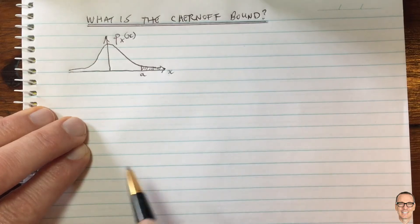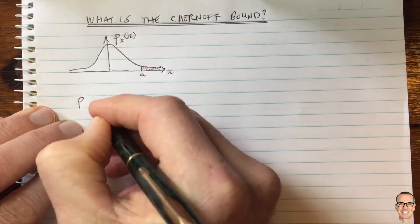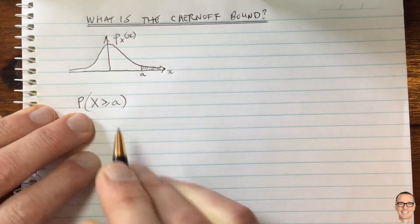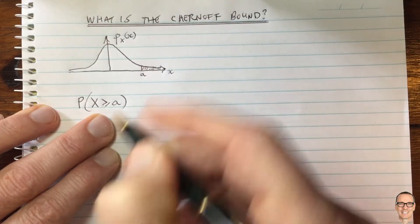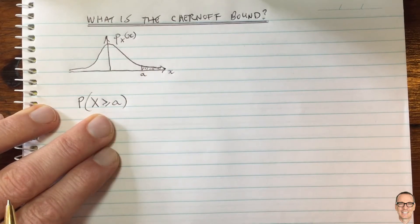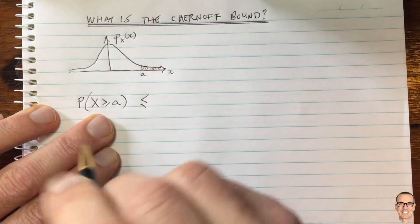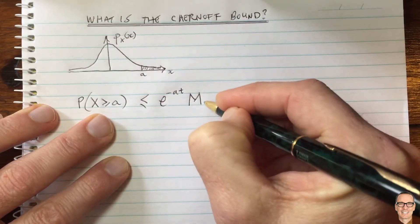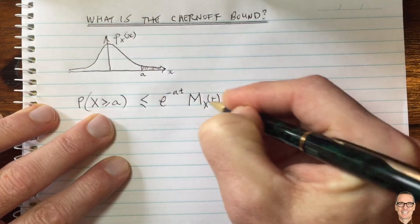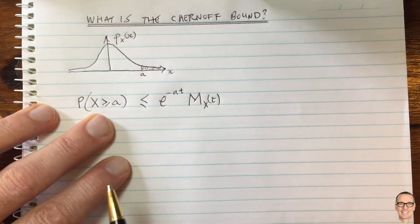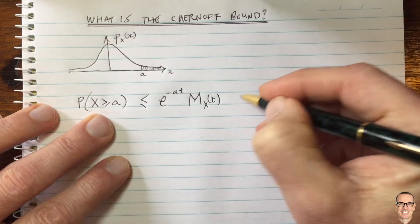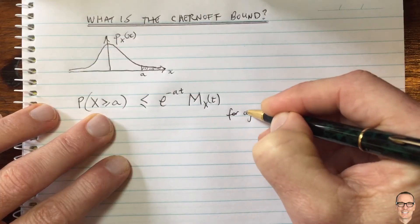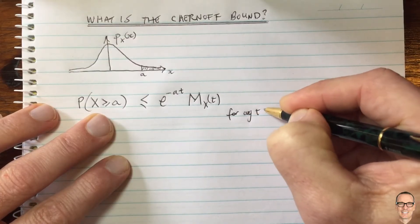Let's be more precise about the Chernoff bound. We're interested in the probability that the outcome of the random variable is bigger than or equal to a certain value a. The Chernoff bound tells us that probability — the area under the curve — is less than or equal to e to the minus at times the moment generating function, and this holds for any t greater than zero.